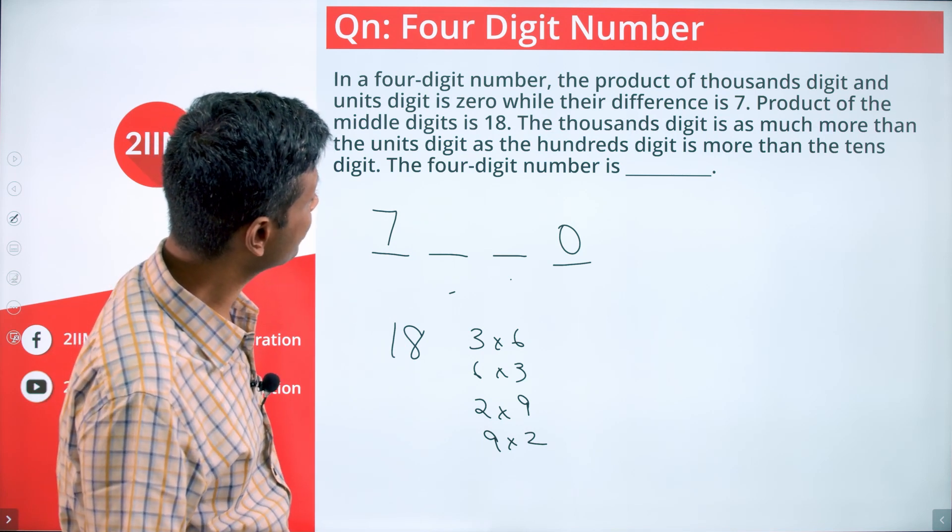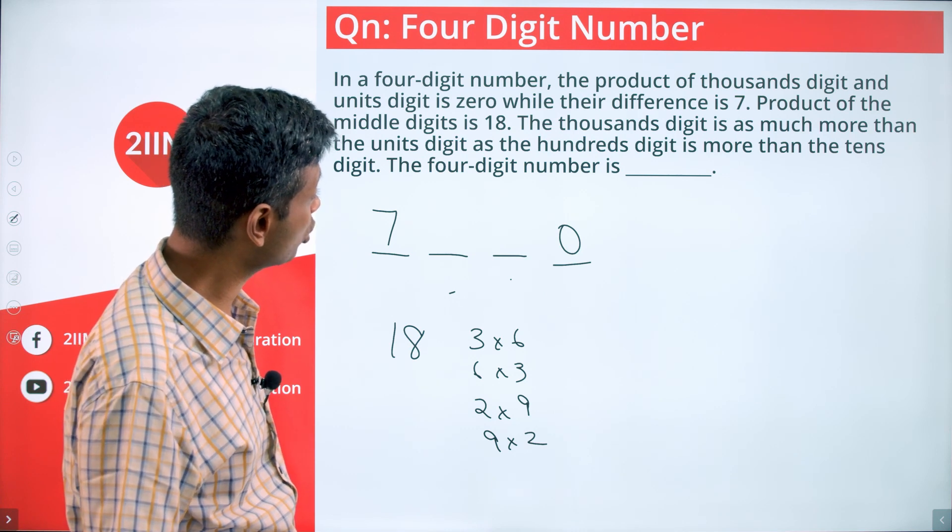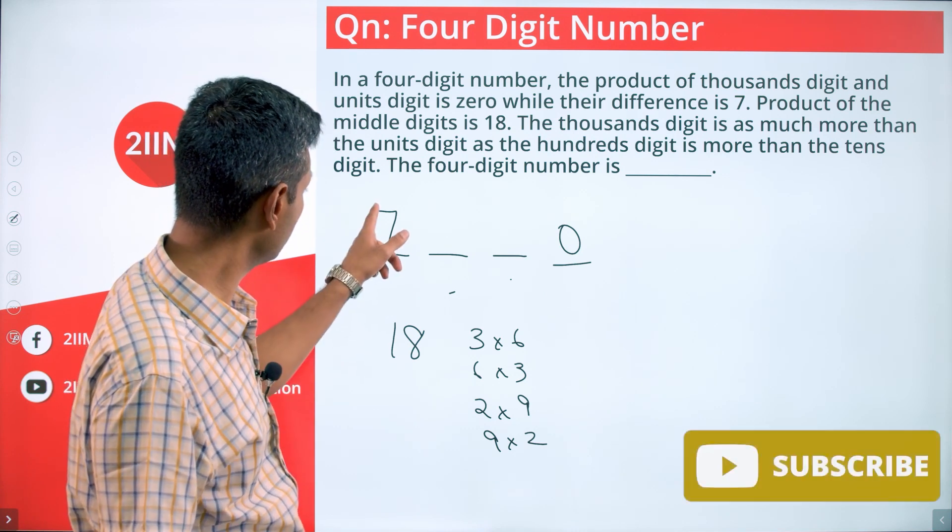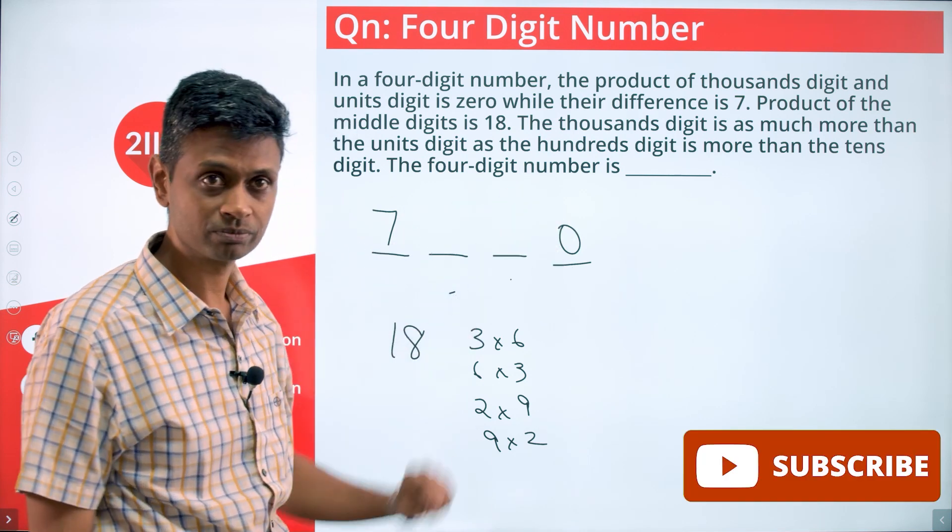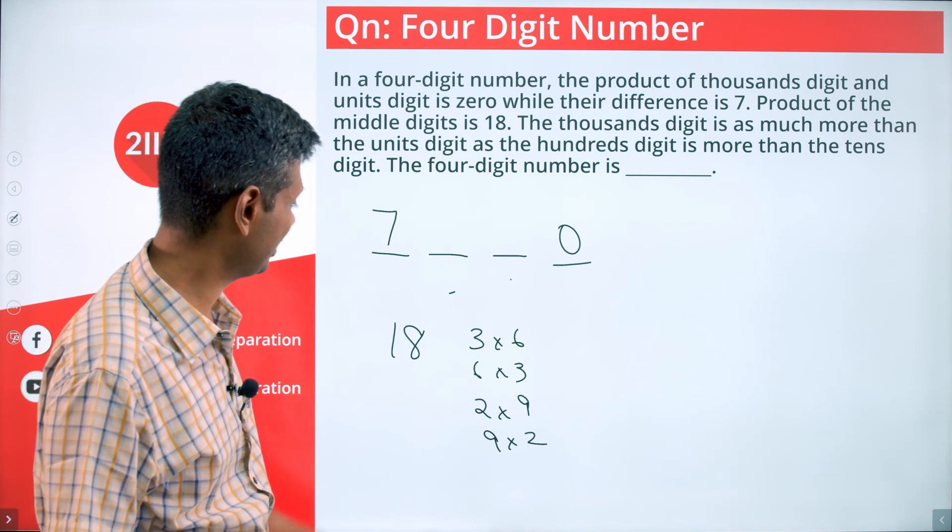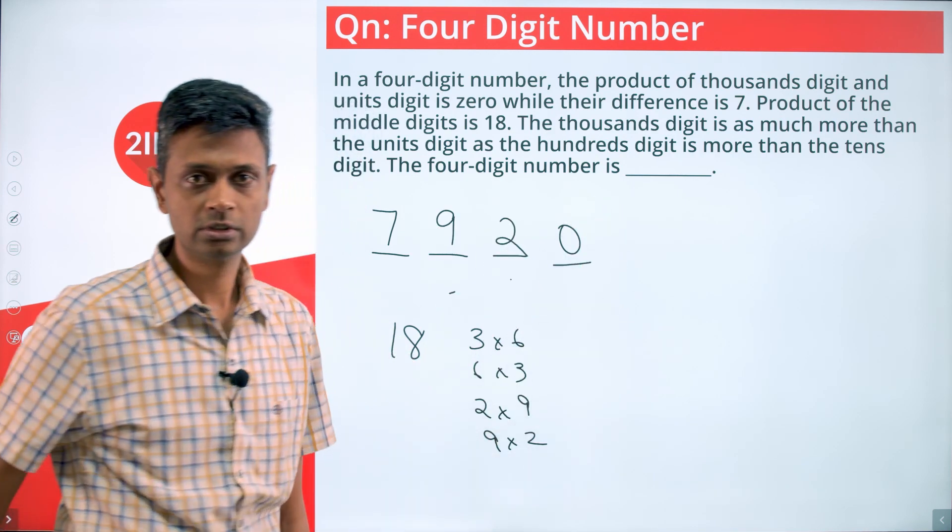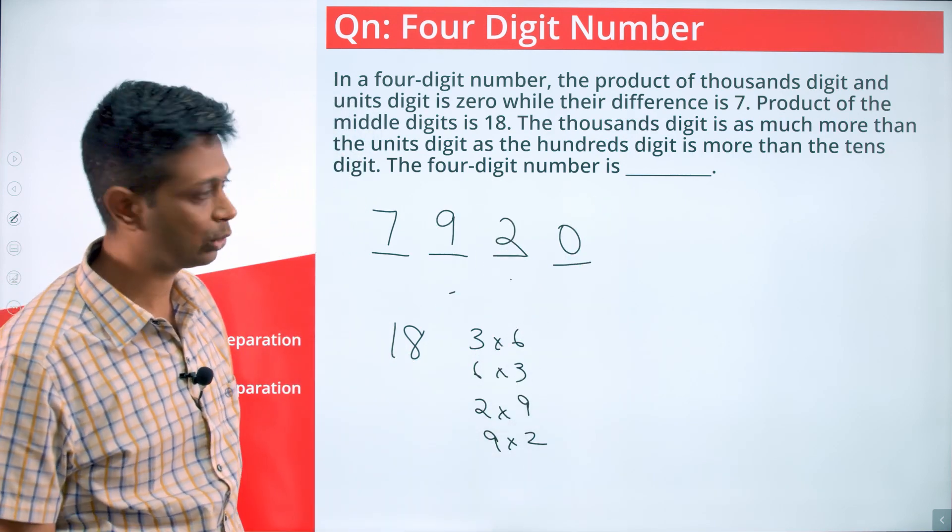The thousands digit is as much more than the unit digit as the hundreds digit is more than the tens. Thousand digit is more than unit digit by seven, so the hundreds digit should be more than the tens digit by seven. 9, 2. 7920 is the number we are looking for.